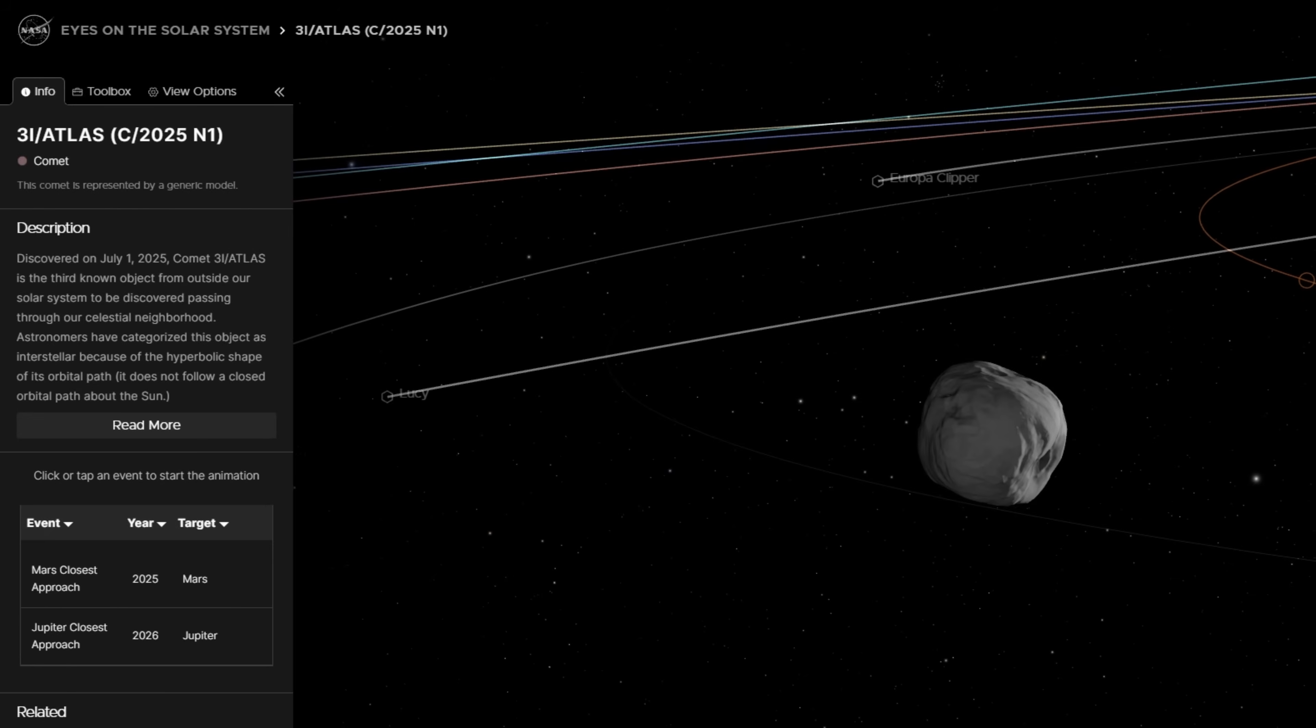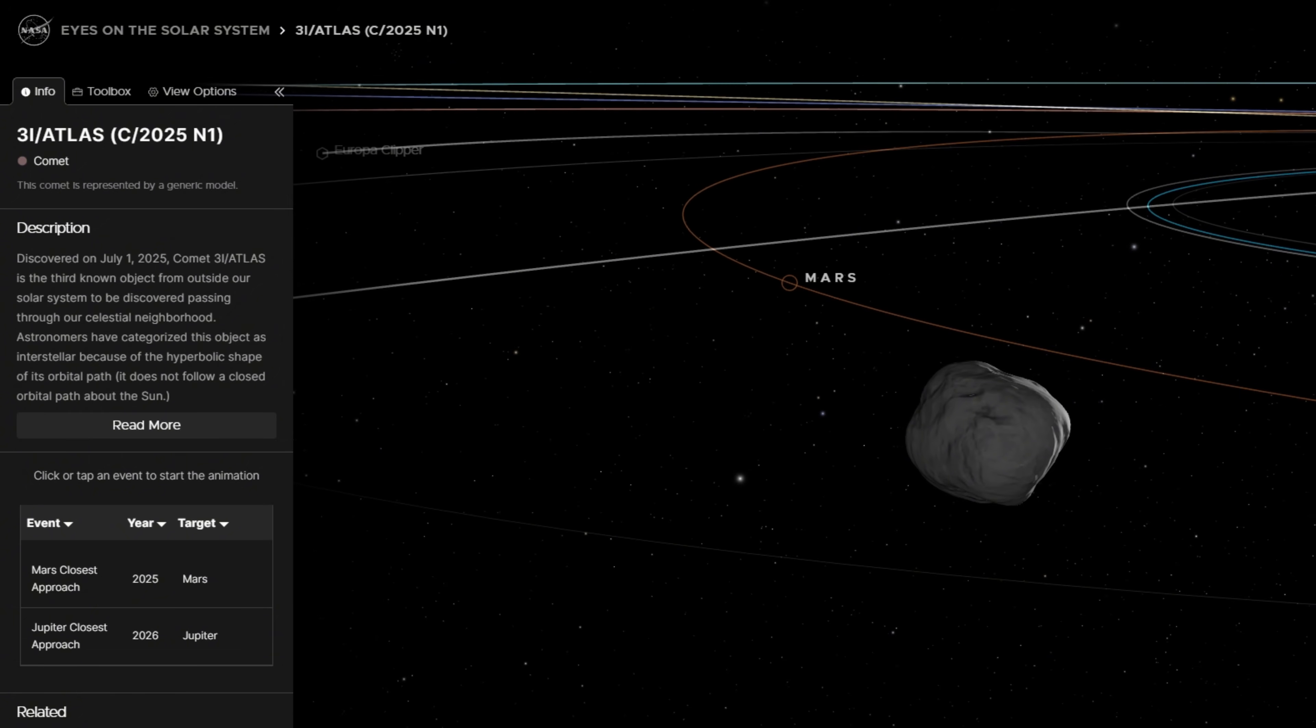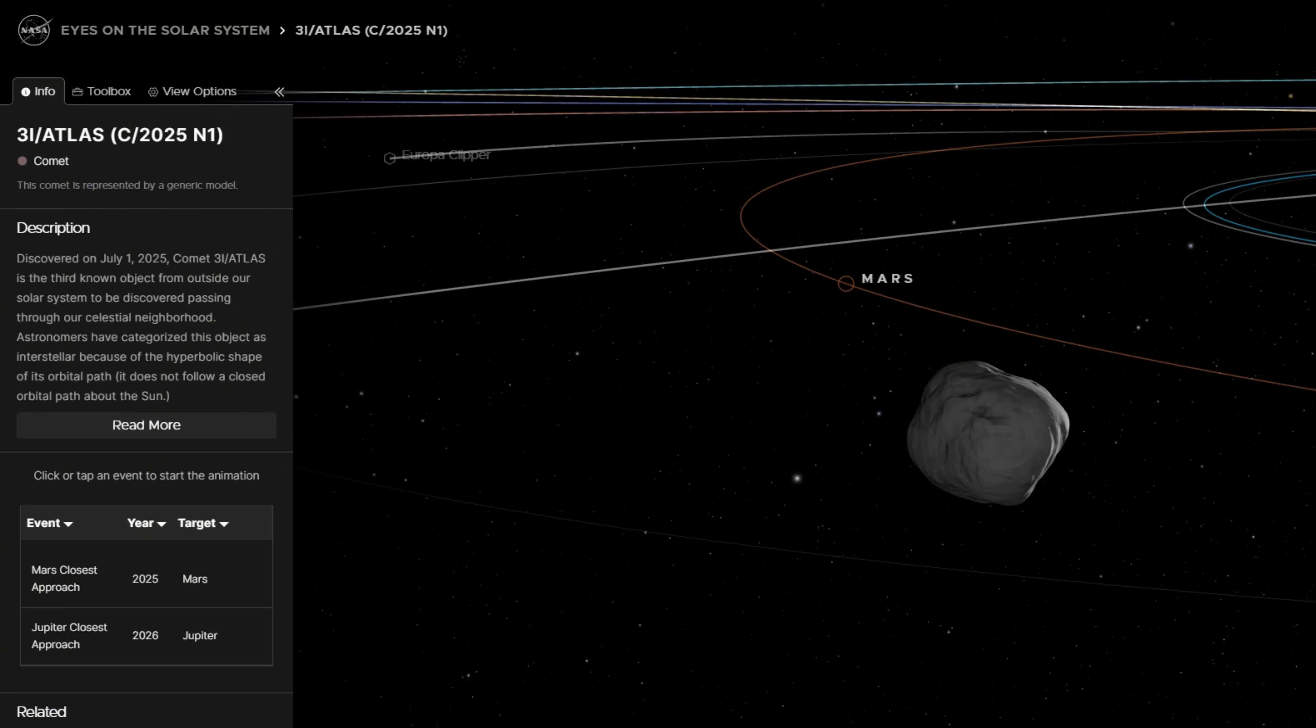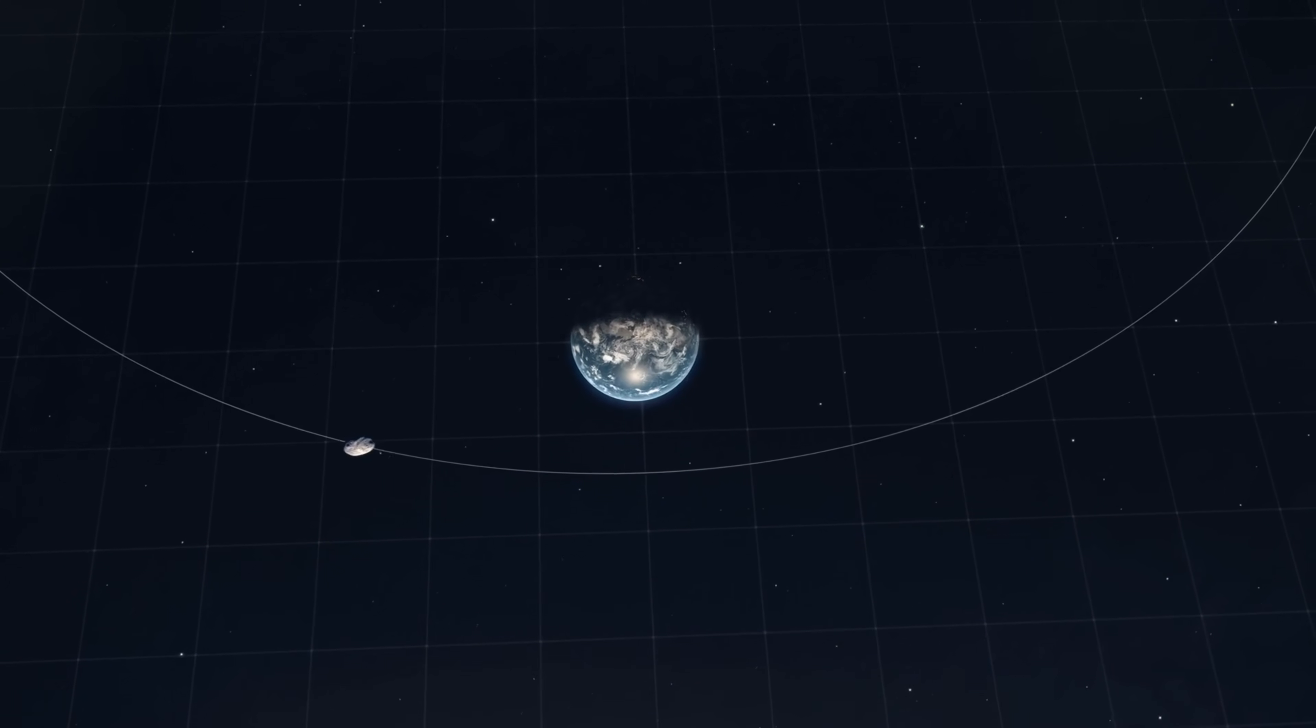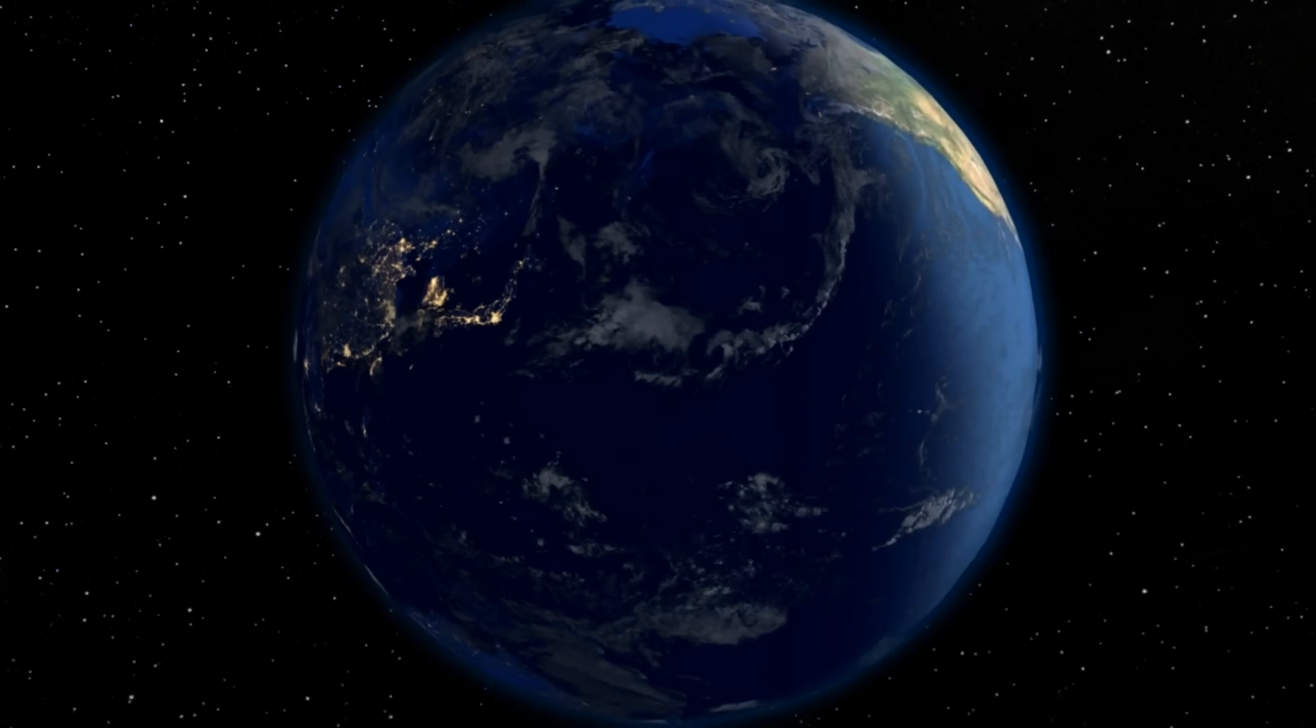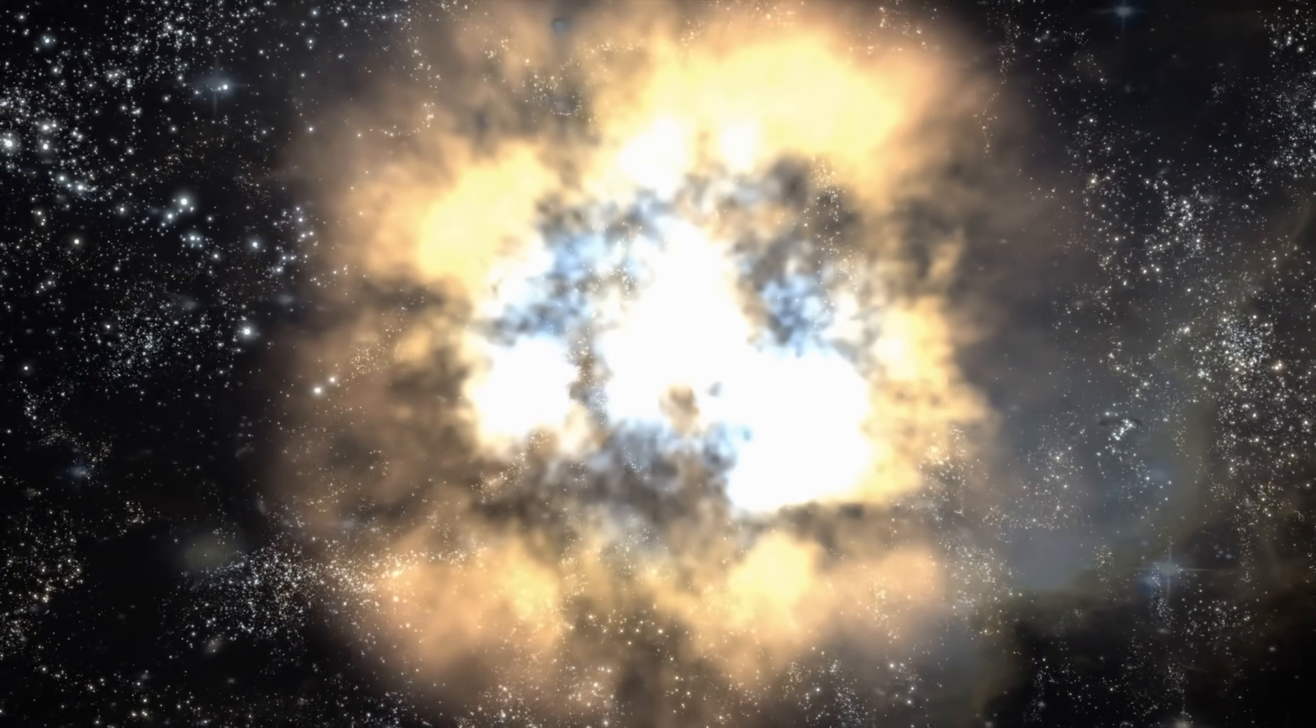For now, the object continues its passage through the inner solar system, leaving behind a trail of questions sharper and longer than its sunward anti-tail. Some may find their answers in physics, others might require broader thinking. But the significance of 3i Atlas is already clear. It has breached the boundary between the expected and the unimaginable. And it reminds us—scientists, skeptics, and the curious alike—that discovery is often born not from what we understand, but from what refuses to fit.